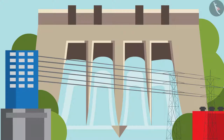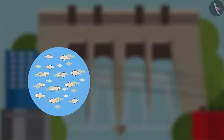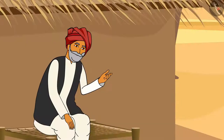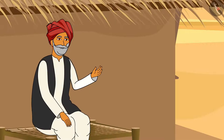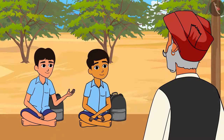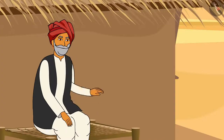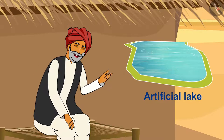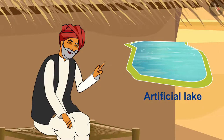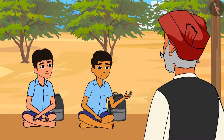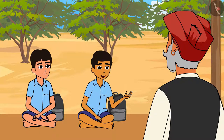These dams are very useful. They can generate electricity from the force of falling water, which is called hydroelectricity. They also help in fisheries, water storage, etc. That is why these dams are often called multi-purpose projects. An artificial lake is created using a dam in order to store water — this lake is called a reservoir.